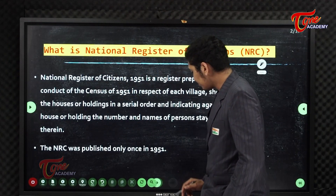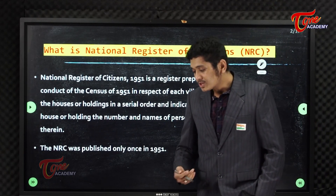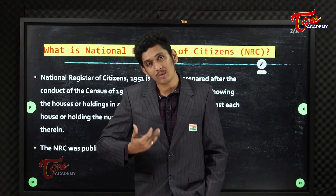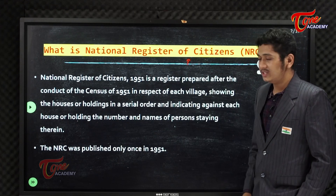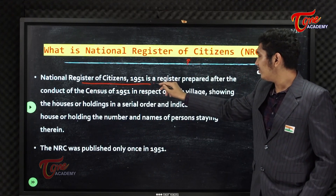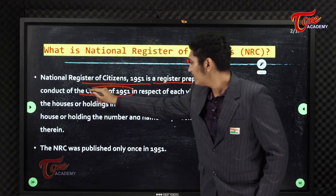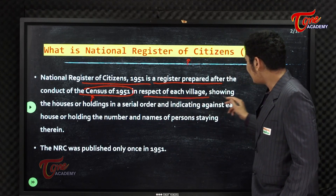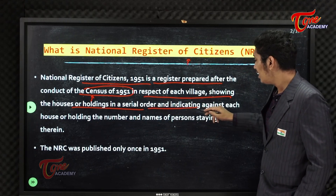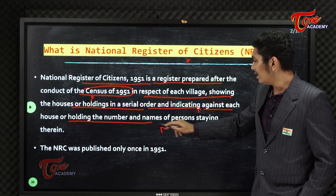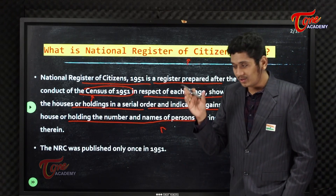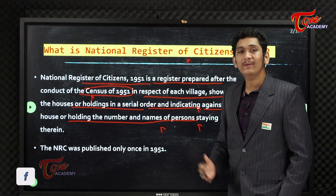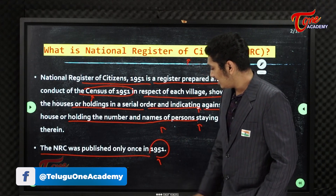Coming to NRC — NRC was first conducted in the year 1951 all over India, but it was never revised again. It was only revised for the purpose of Assam. The National Registry of Citizens 1951 is a register prepared after the conduct of the census of 1951. We noted down the names of all the citizens of India in respect to each village, showing the houses or holdings in serial order and indicating the number and names of persons staying in each house. The NRC was published only once in the year 1951.